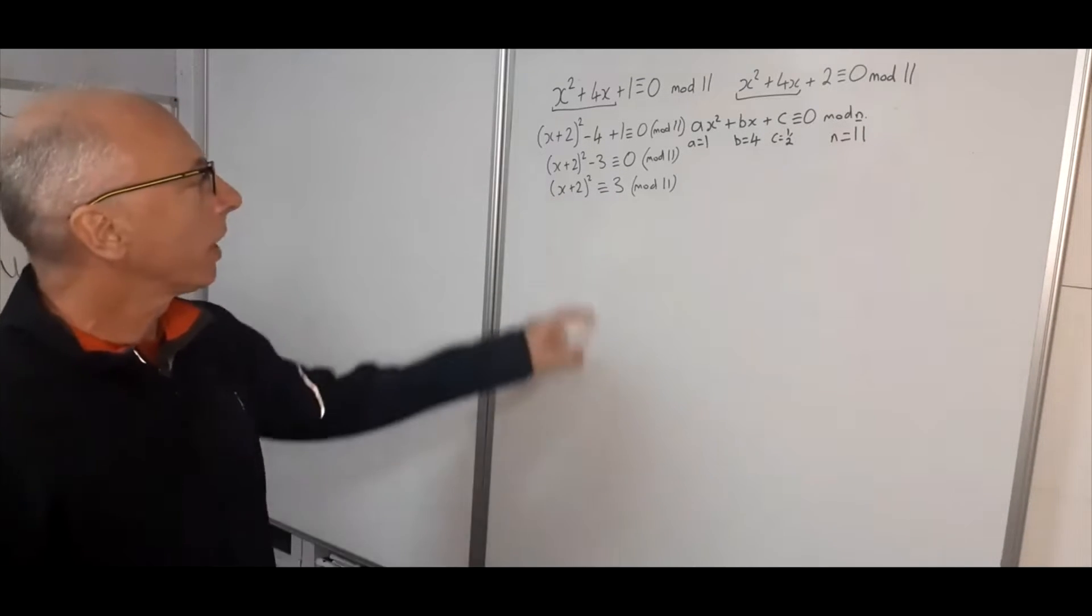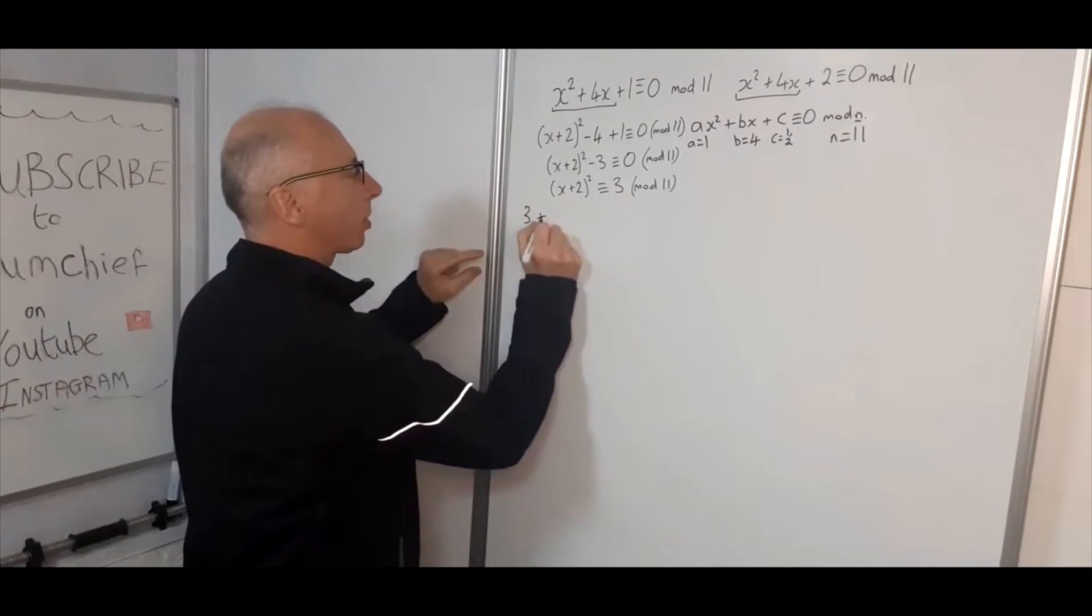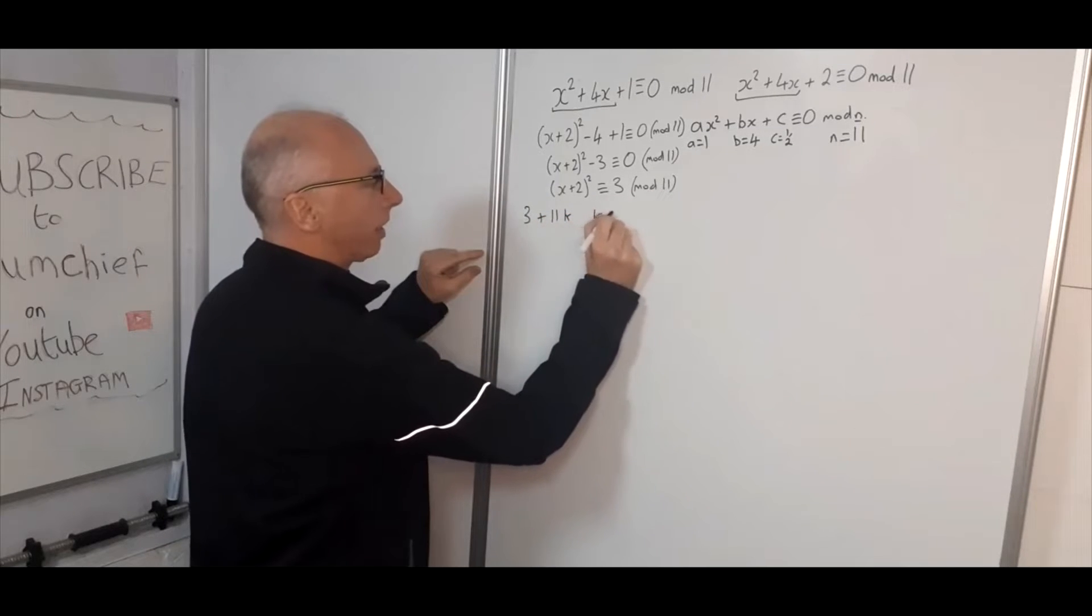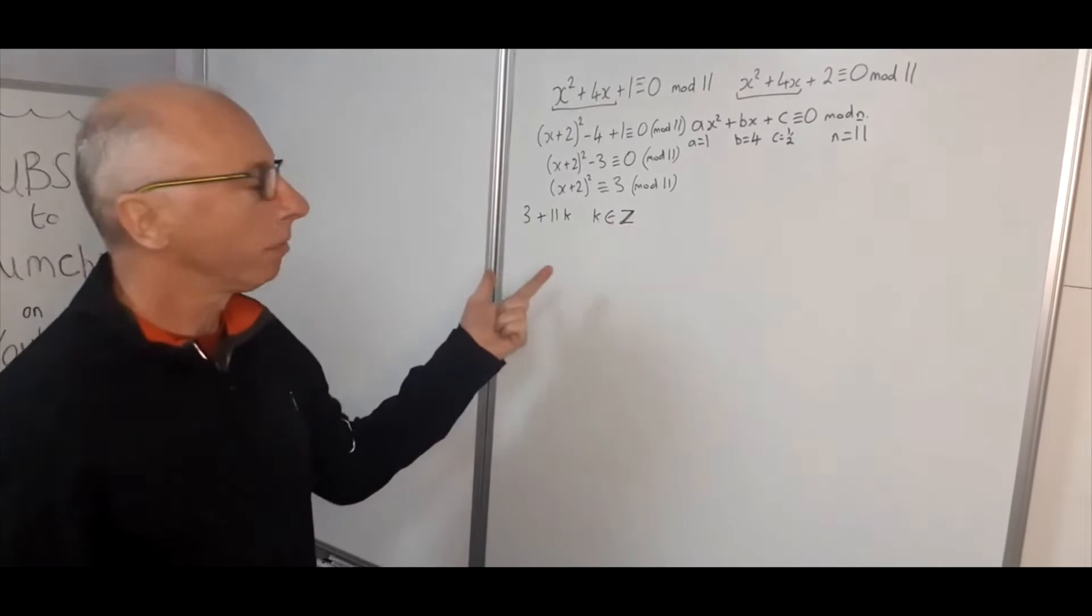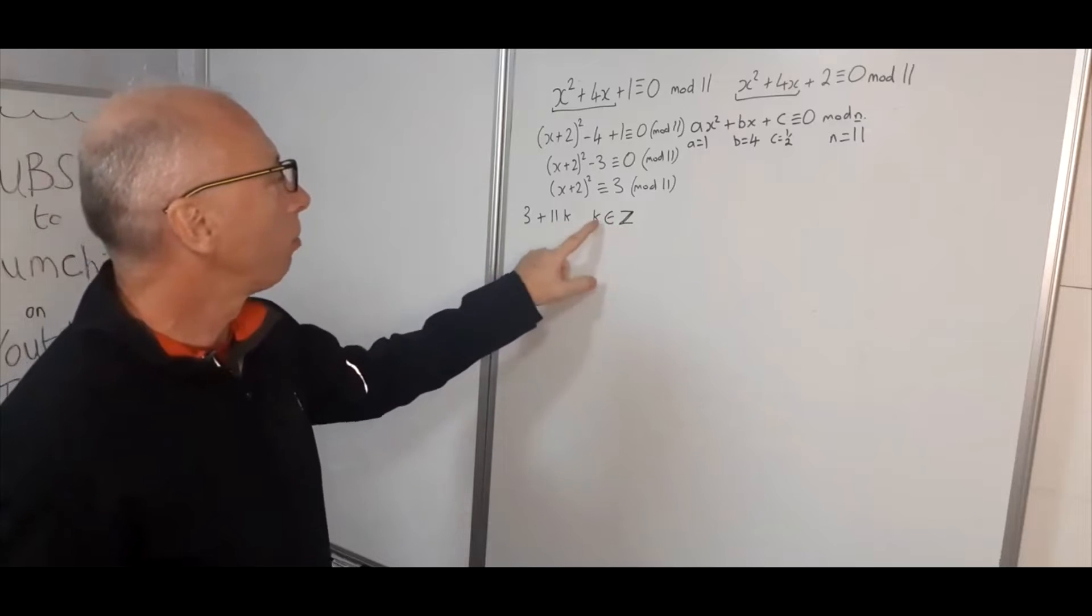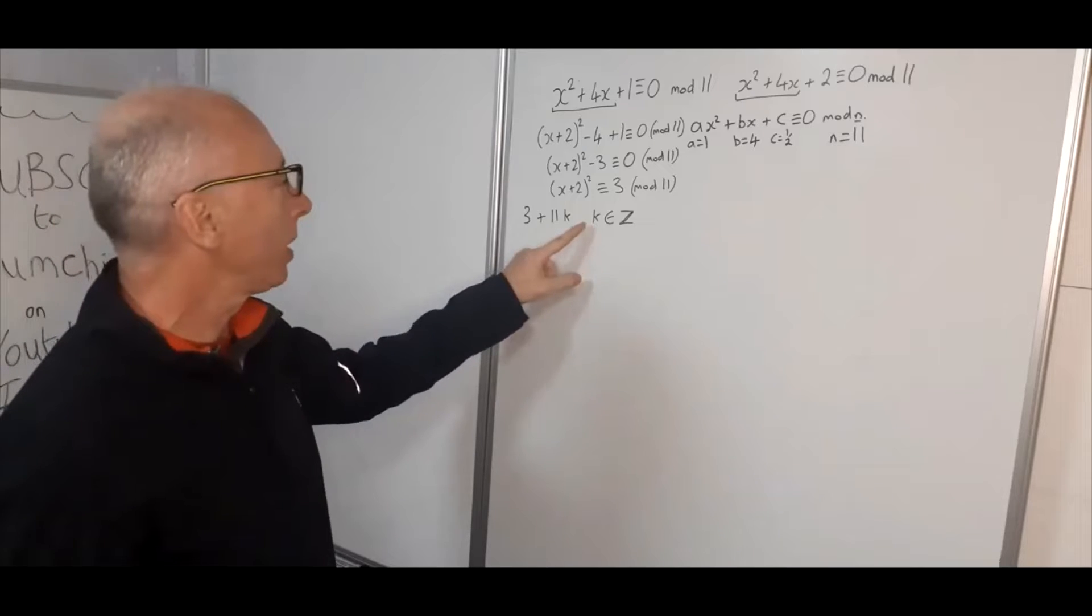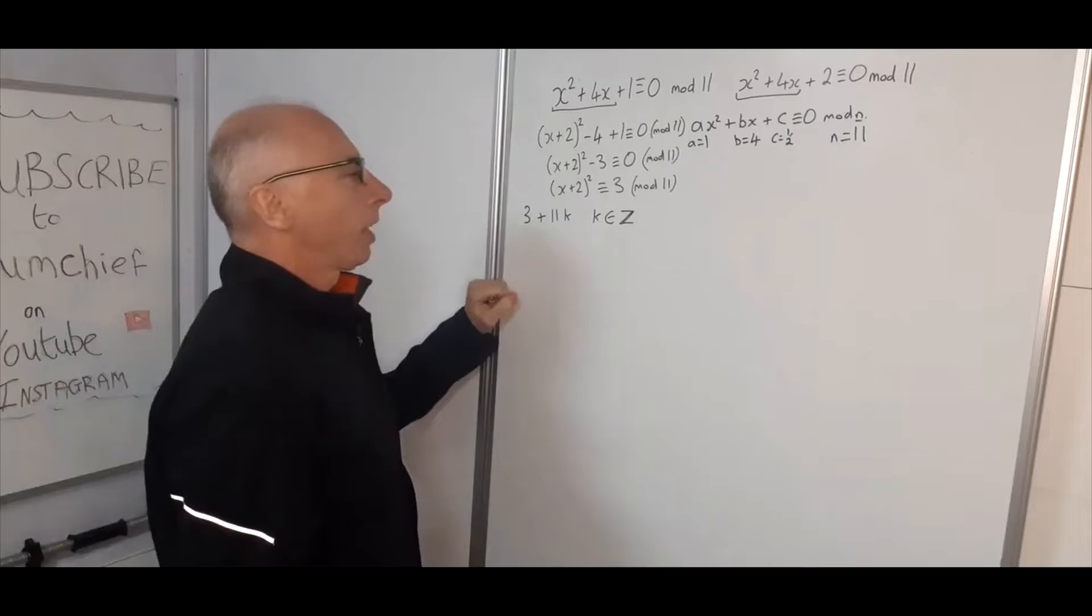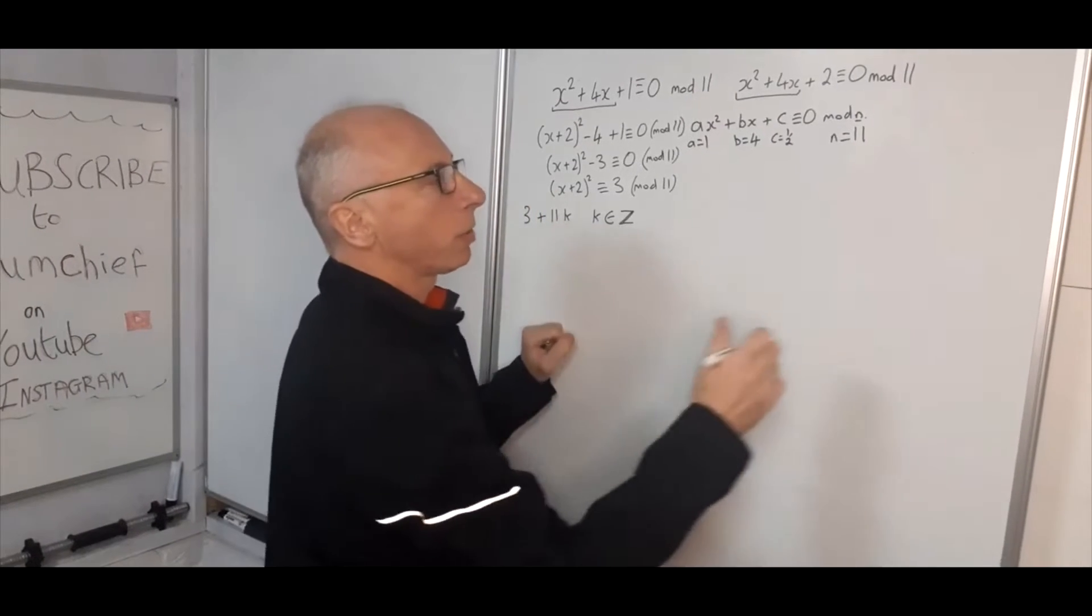So now what we need to do is to find values of 3 plus 11k. So where k is in the set of integers or you could also say real numbers. And this k will range from 0 to 10. We could range to infinity in fact but here we're going to be interested on 0 to 10.